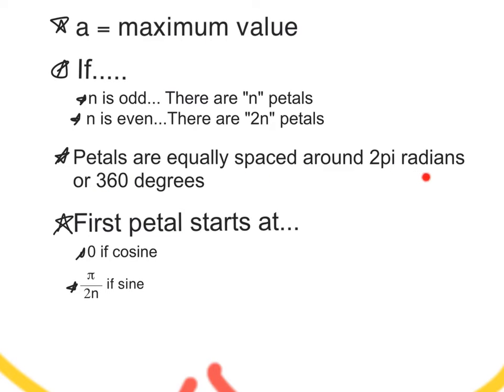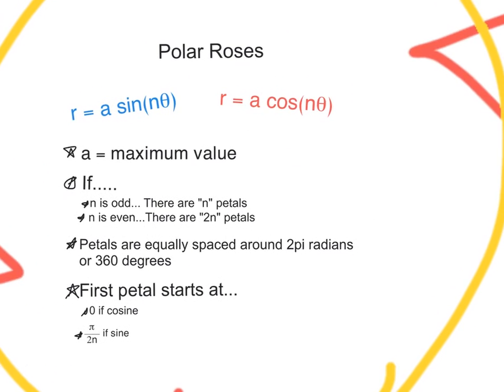Petals are equally spaced around two pi radians, or 360 degrees. And the first petal starts, if it's cosine, at zero. If sine, then pi over two n. Let's do some examples, and you'll see why some of these rules are what they are.